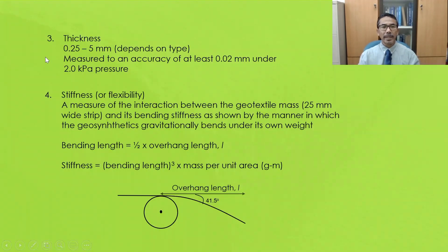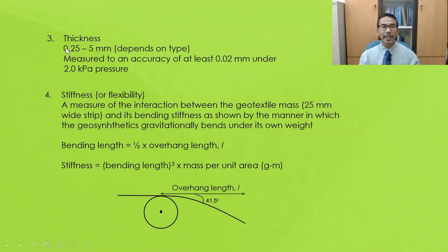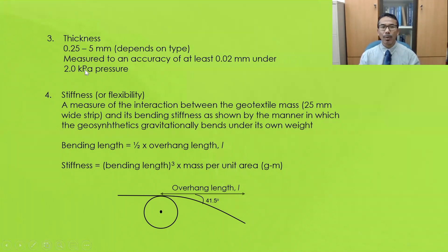The third physical property is thickness. Depending upon the type of Geosynthetic product, thickness may vary from 0.25 mm to 5 mm. The thickness is measured to an accuracy of 0.2 mm under a pressure of 2 kPa, because some of these materials may be placed under pressure in the field.